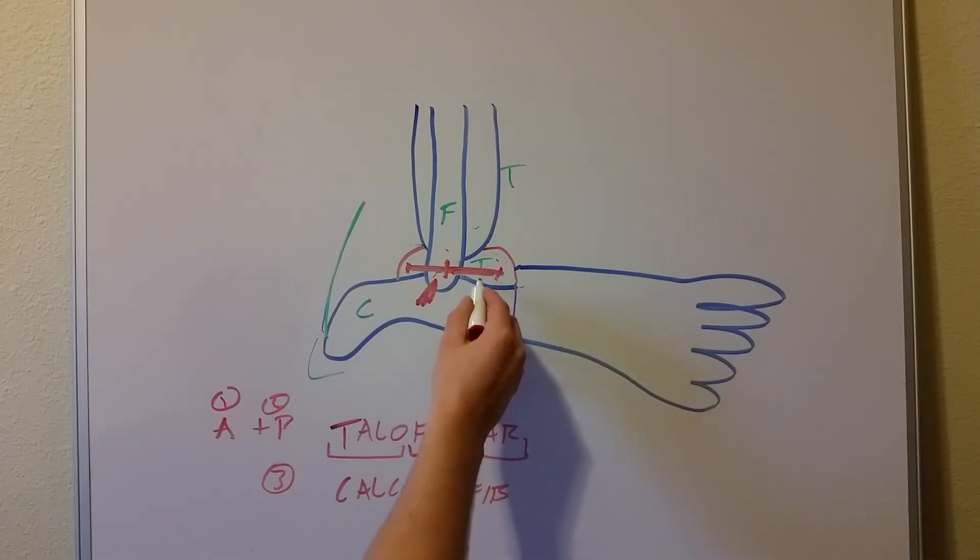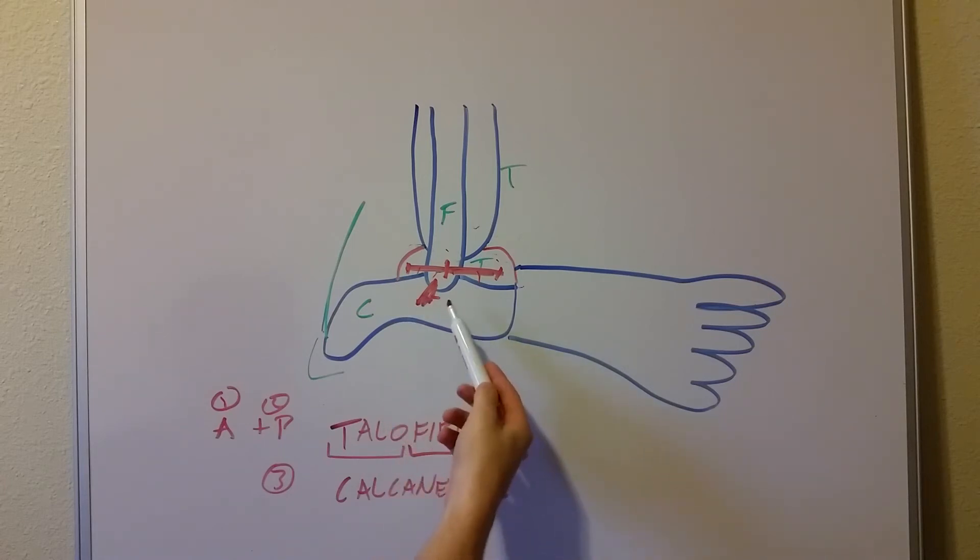Now, as you can see here, there's an anterior one, a middle one, and a posterior one. One, two, three. Three ligaments. The anterior talofibular, the calcaneofibular, which is the only one of, and the posterior talofibular. Now, that's really nice for us because that's the exact way that we name the ankle sprains.